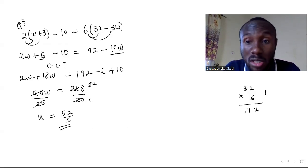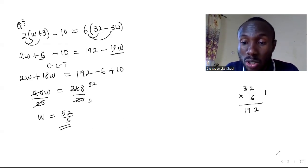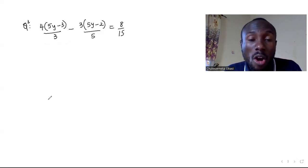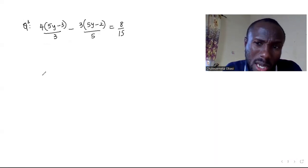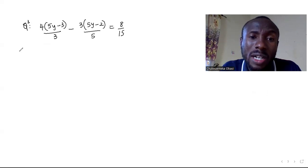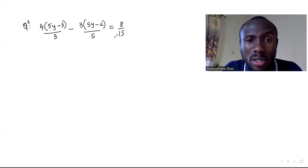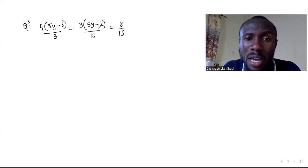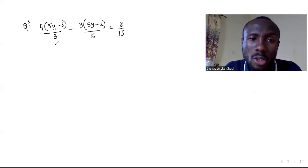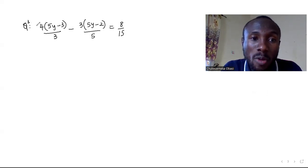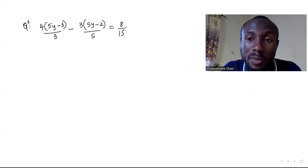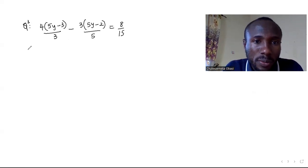For question 3, we have a fraction and I like to clear out the fractions. To do that, I look for the lowest common multiple of all the denominators. The LCM here is 15, so I'll multiply both sides by 15 and see how it goes.